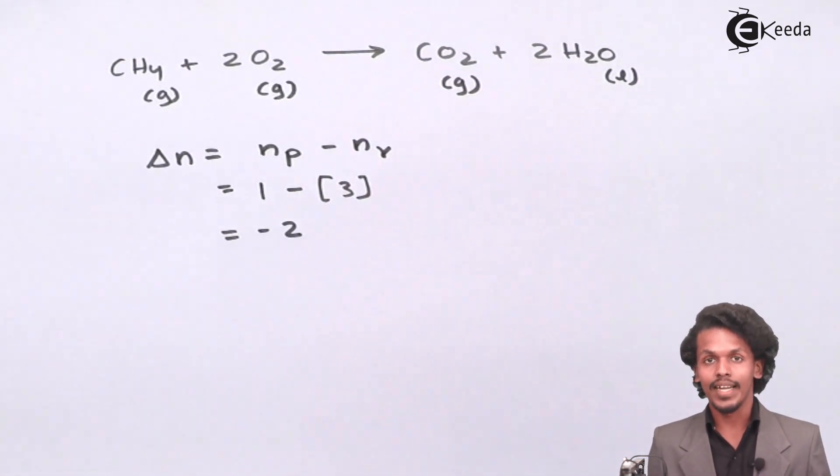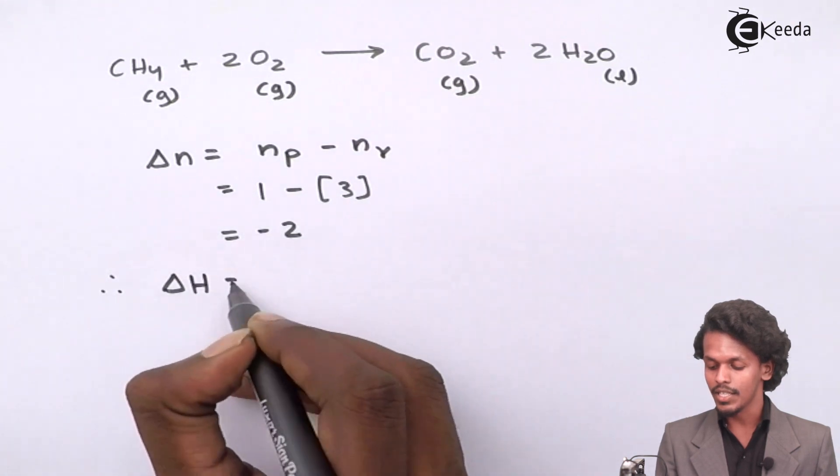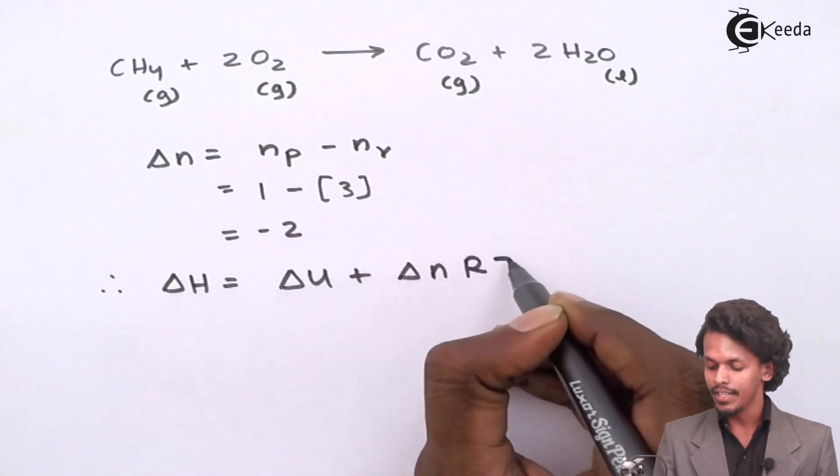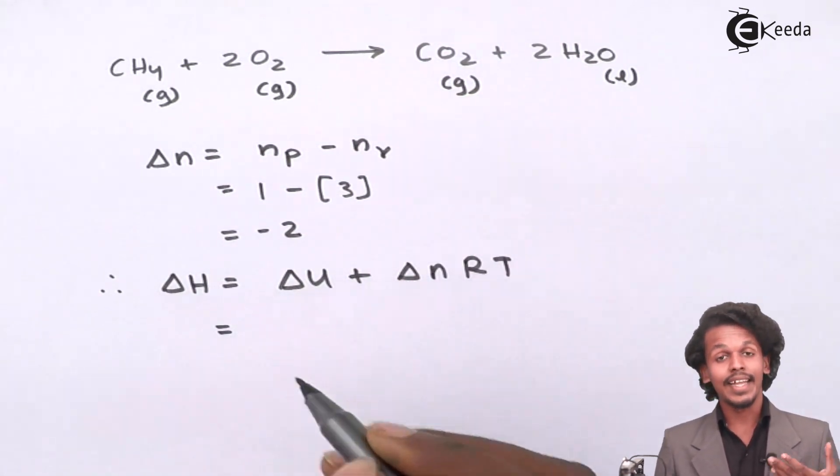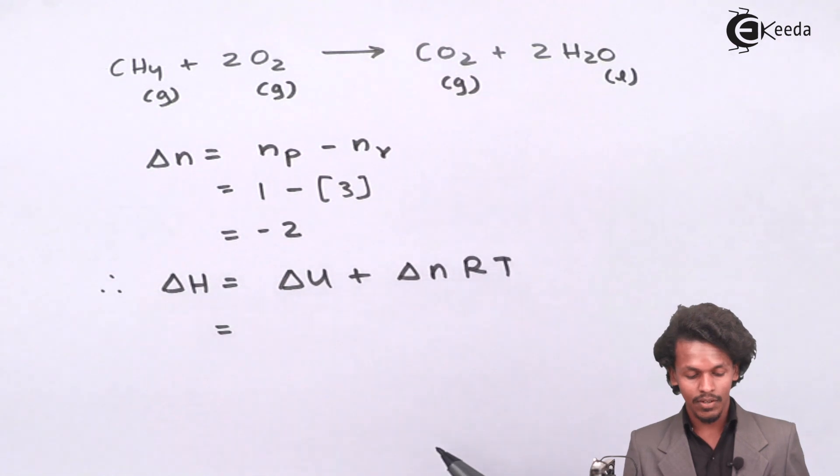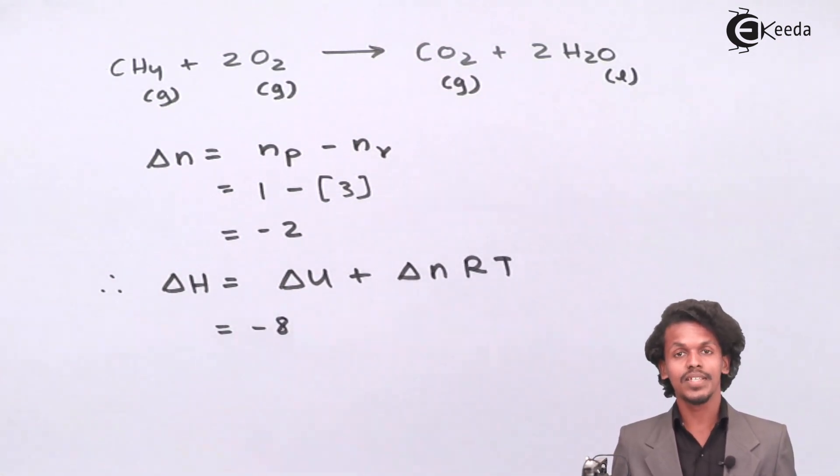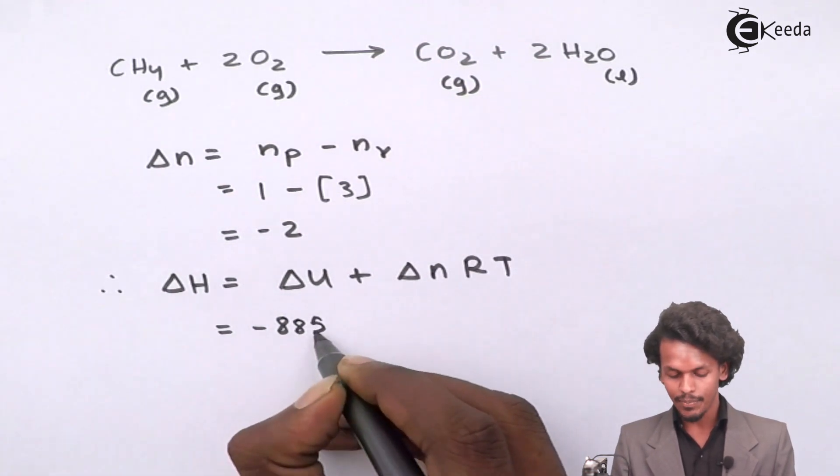Now I can easily calculate the value of delta H. We know that delta H equals delta U plus delta N R T. The value of delta H is what they have asked for, and the value of delta U has been given to us.